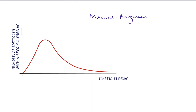A Maxwell-Boltzmann distribution curve shows us the normal distribution of molecules in a population or particles. On the y-axis we've got the number of particles with a specific energy, and on the x-axis, kinetic energy.